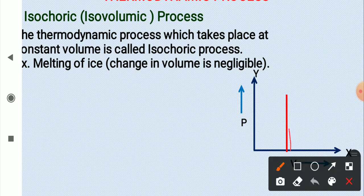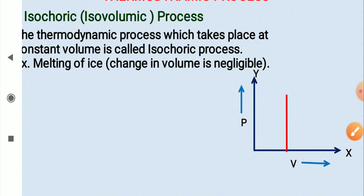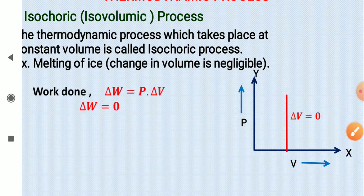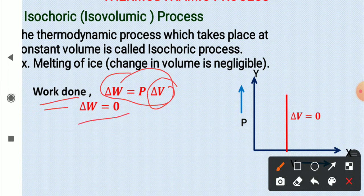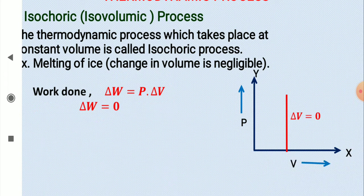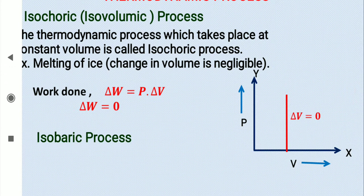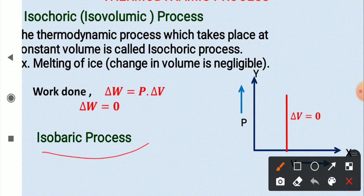Looking at the PV diagram, you can see that the volume is constant throughout, so the change in volume is zero. The work done in this process is W = P·ΔV, and since the change in volume is zero, the work done is zero. Next is the isobaric process.